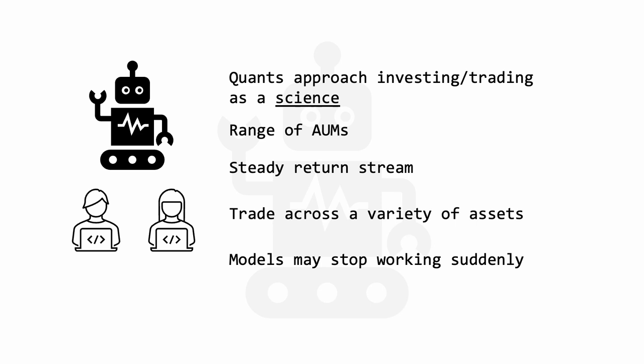Quants approach investing and trading as a science. The firms they work for range in assets under management, from tiny boutique quant firms to large giants such as Citadel, Two Sigma, and of course Renaissance Technologies. When implemented correctly, quantitative strategies produce a steady return stream for their investors, and they trade across a variety of assets. However, the models employed by these quants are also known to stop working suddenly, due to inadequate research and backtesting, but also changes in market regime.